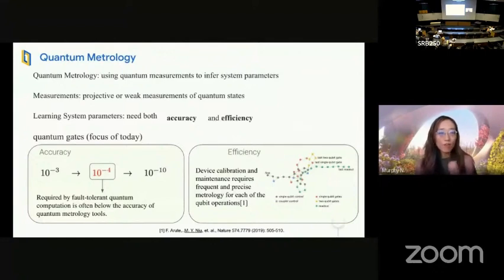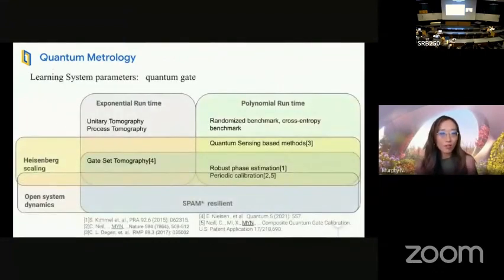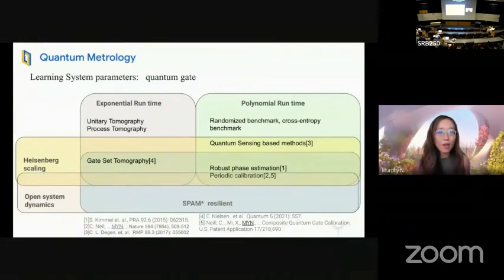Accuracy and efficiency are the main goals for extremely useful quantum metrology efforts. We can also characterize or categorize the existing methods according to the efficiency, which is the runtime and the accuracy, which is the scaling of the accuracy versus depth, as well as the applicability, for example, whether we can learn open system dynamics or not, and whether we are robust against state preparation and measurement error or not. We'll go over every detail in this table. It's not a complete table, of course.